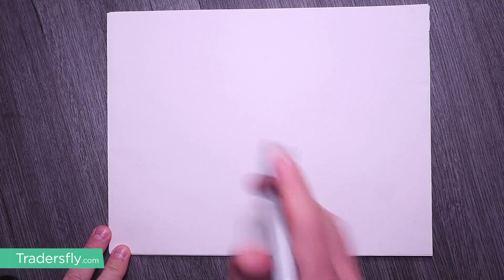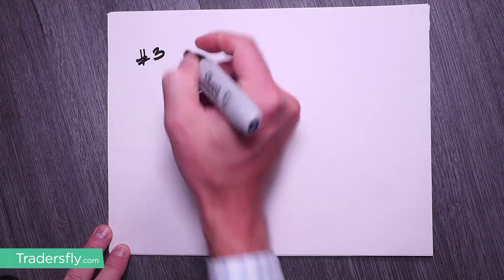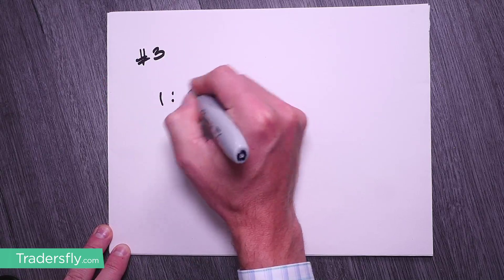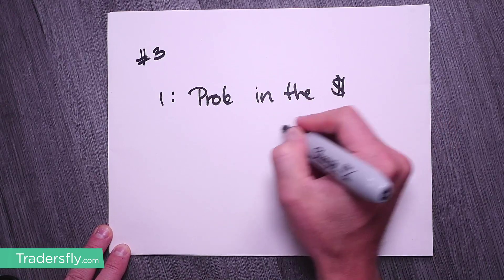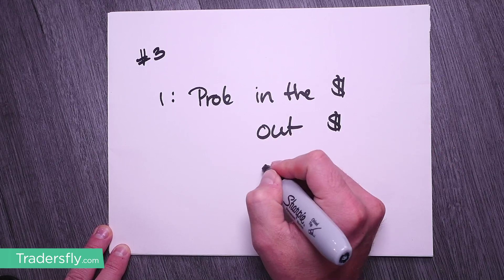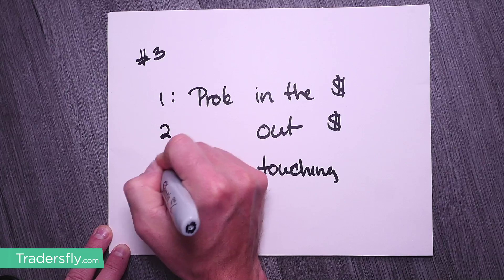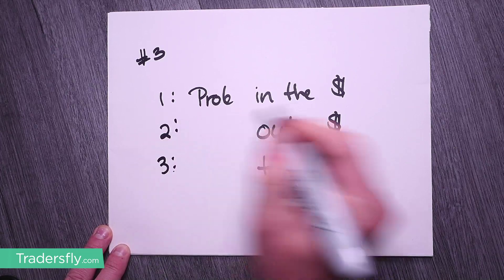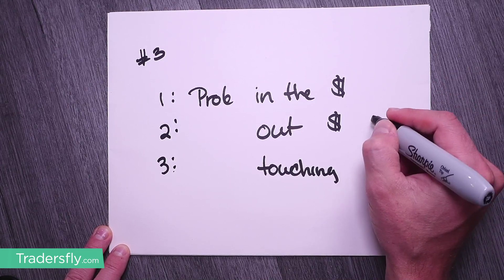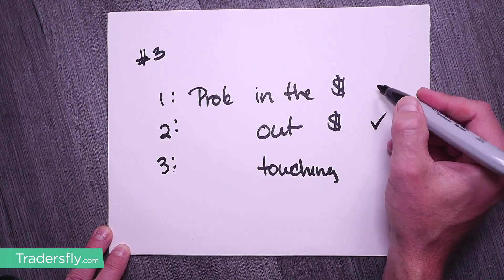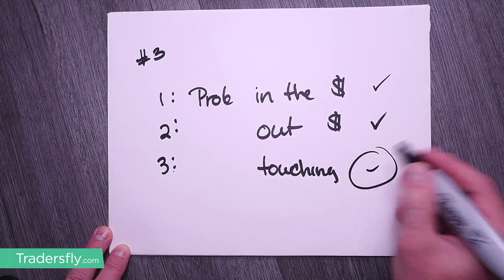As we look at probabilities, you have three types: probability of in the money, probability of out of the money, and probability of touching. If you're looking to sell vertical spreads or sell option premium, sometimes you might want to be out of the money. If you are looking to buy a call or put, sometimes you want to look at in the money. Today, we're going to focus on probability of touching.